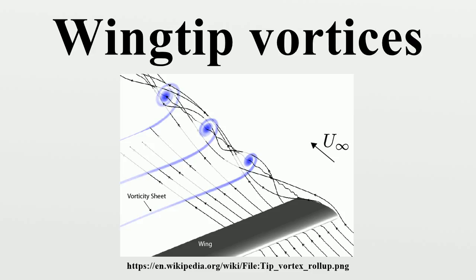Wing-tip vortices form the primary component of wake turbulence. Depending on ambient atmospheric humidity as well as the geometry and wing-loading of aircraft, water may condense or freeze in the core of the vortices, making the vortices visible.